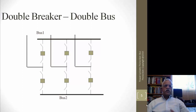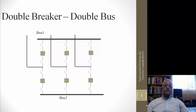For maximum reliability, you put two circuit interrupting devices on a transmission line. If there is a problem with any of these interrupting devices, you can still serve the load and connect the system to the buses through the second breaker. This is the most expensive version of bus protection.